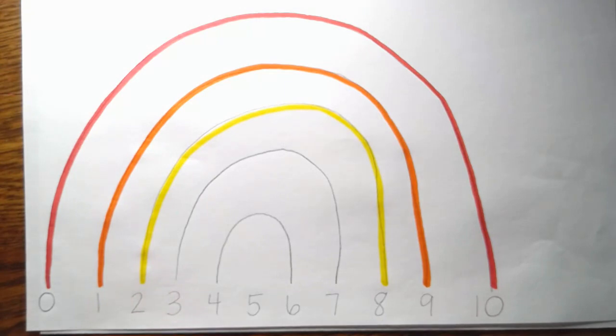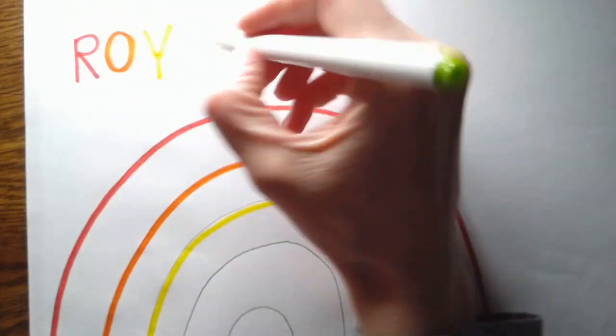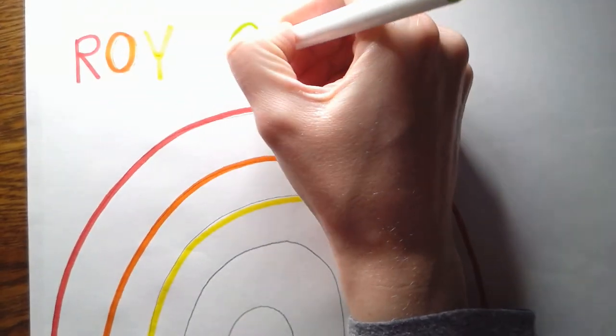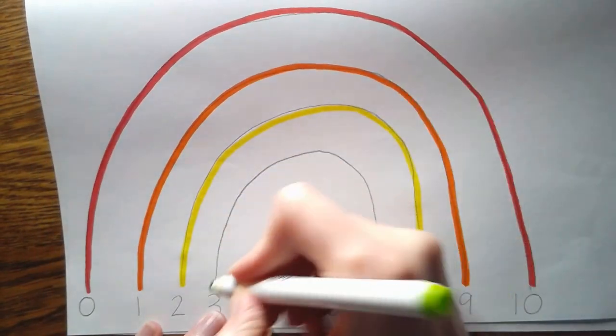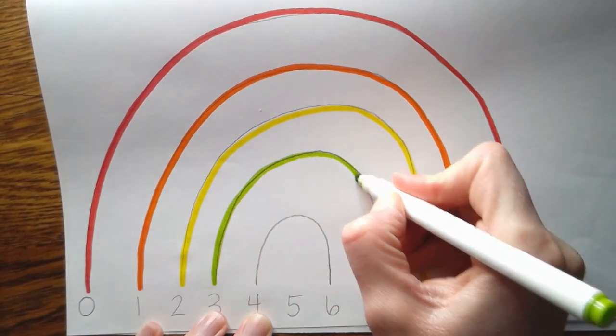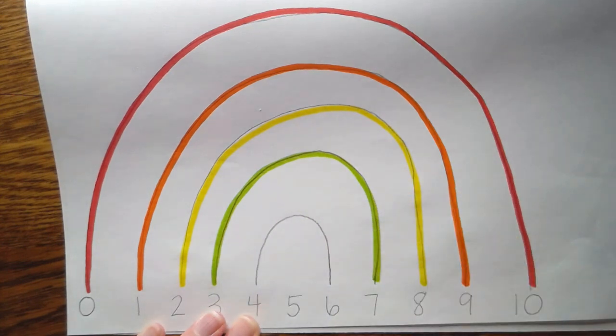Now, what do you think the G is for in Roy G. Biv? G for green. Good job. You're so smart. Green is next. So I'm going to go from three all the way over. Here we go.